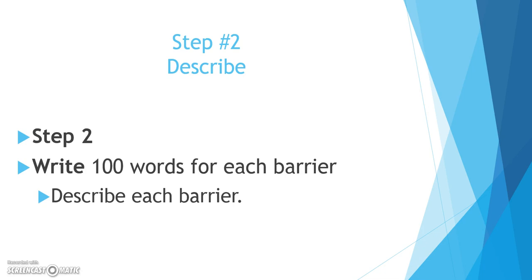The first thing you're going to do is describe the barrier. For example, if I use stress, you want to describe what stress is and how it impacts your thinking. Remember, this is where we want to include citations to our textbook if we're using specific concepts from the text.